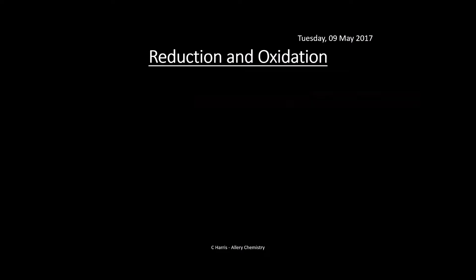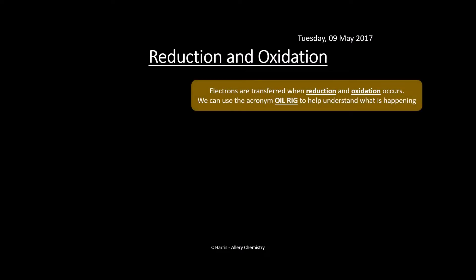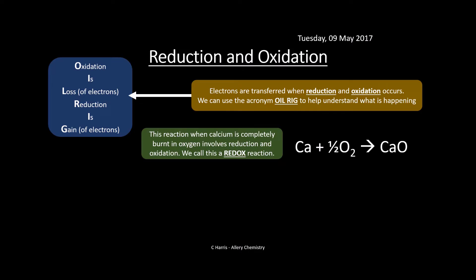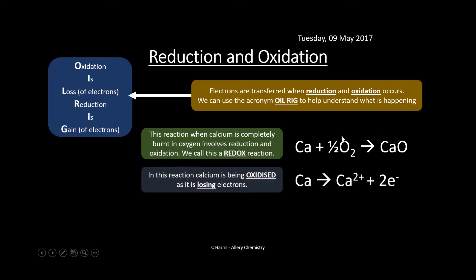We're going to look at reduction and oxidation first. Electrons are transferred when reduction and oxidation occur. We can use the acronym OIL RIG: Oxidation Is Loss of electrons, Reduction Is Gain. You've got to know the difference between oxidation and reduction in terms of electrons, because everything we're going to do here is dependent on knowing that. Let's look at calcium burning completely in oxygen — this reaction involves both a reduction and an oxidation process, making it a redox reaction.